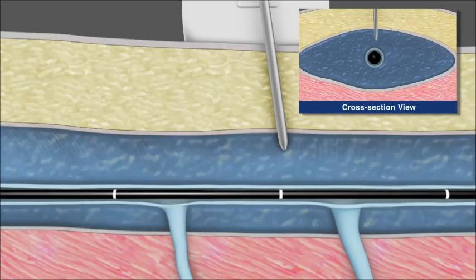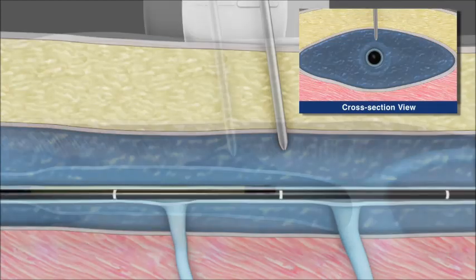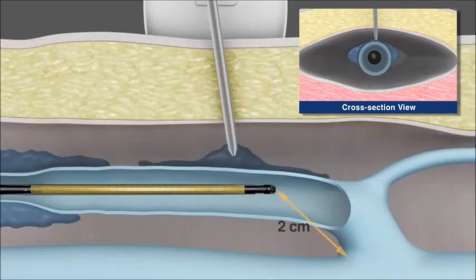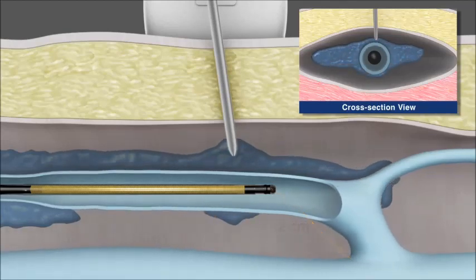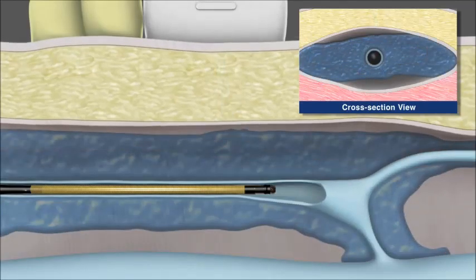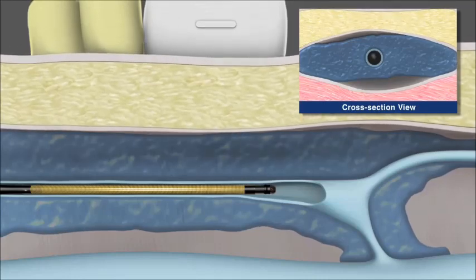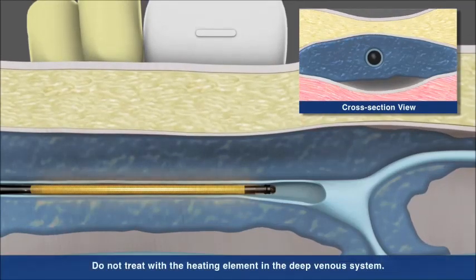The catheter tip position is confirmed and adjusted as needed to ensure the tip is 2 cm from SFJ. Once in place, infiltration of the junction can proceed. External compression is applied to ensure good contact between the catheter and the vein wall.